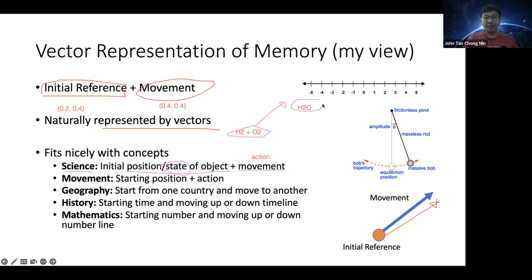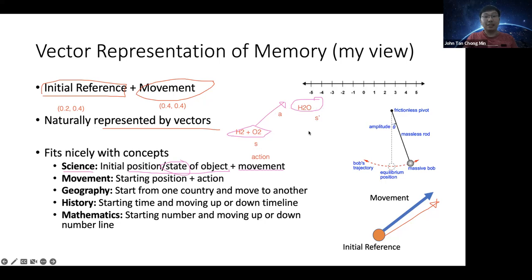This framework of memory fits in very nicely to the state-action-state of reinforcement learning. The way we vectorize this memory: we have a start state as the key, we perform the action — some process — and then we get another state. The initial position plus the motion is what we remember. For motion, if I move my hand, my hand starts here, I take an action and move closer to the screen. That kind of movement has a start point and an action.